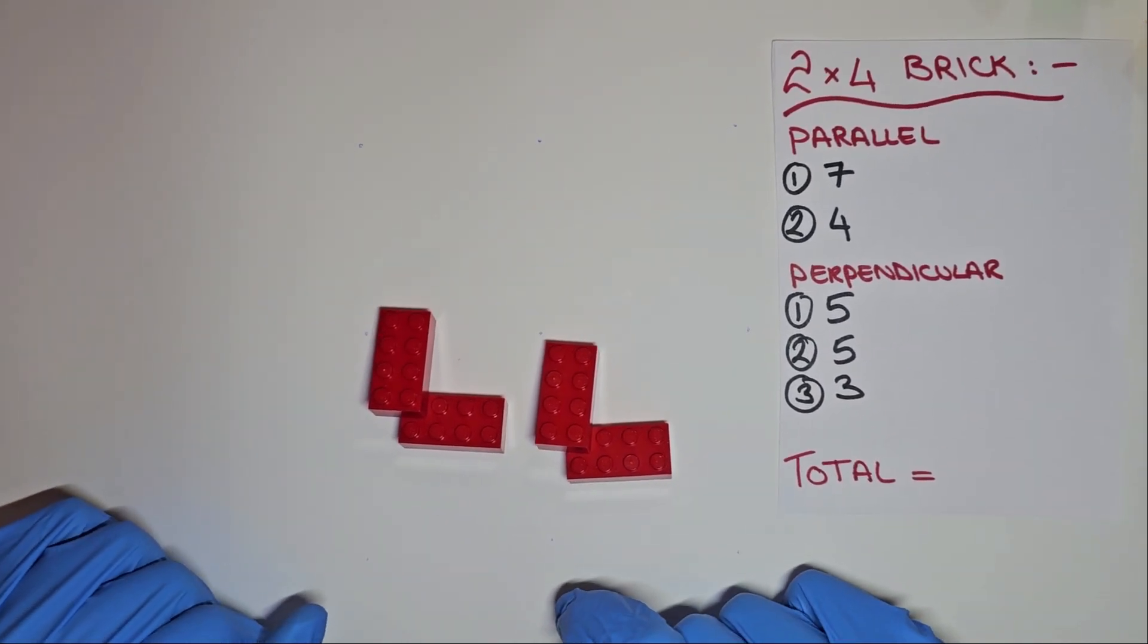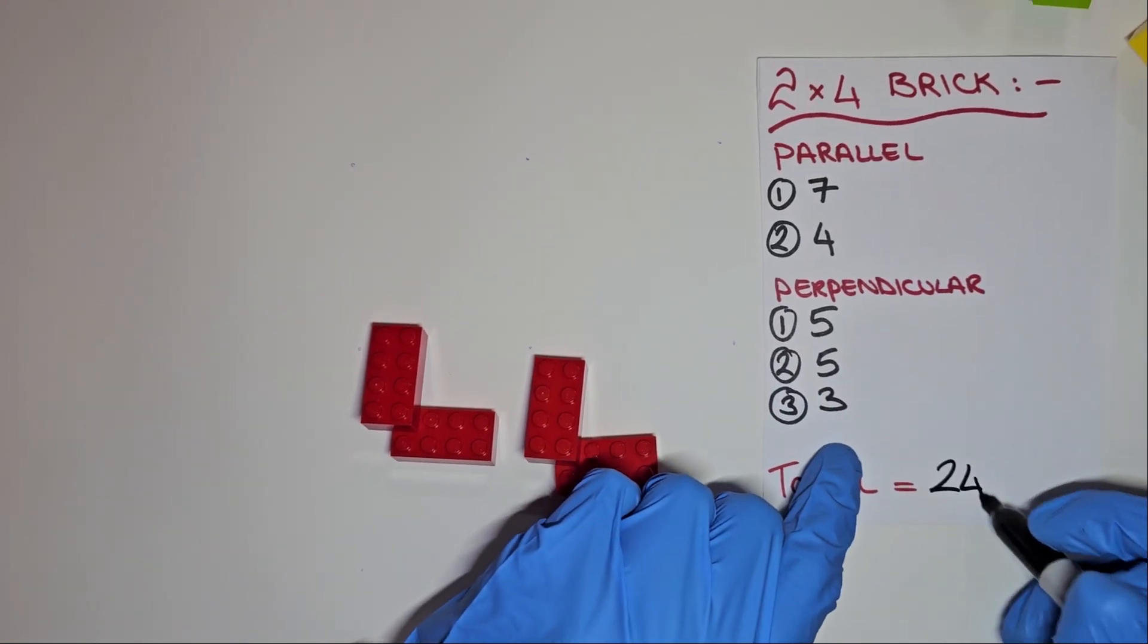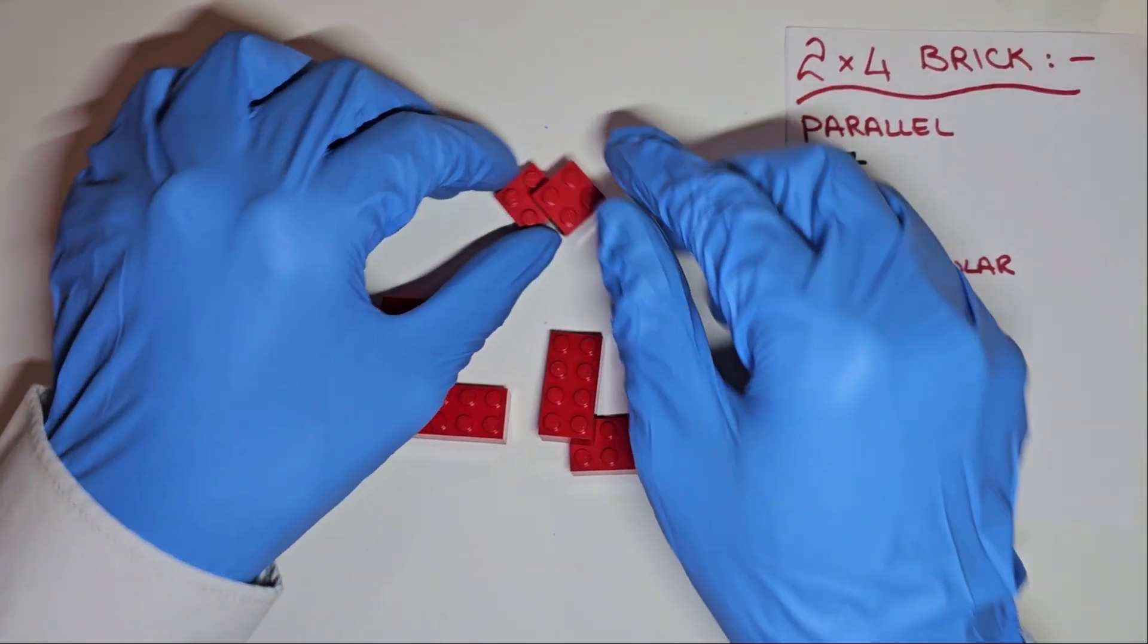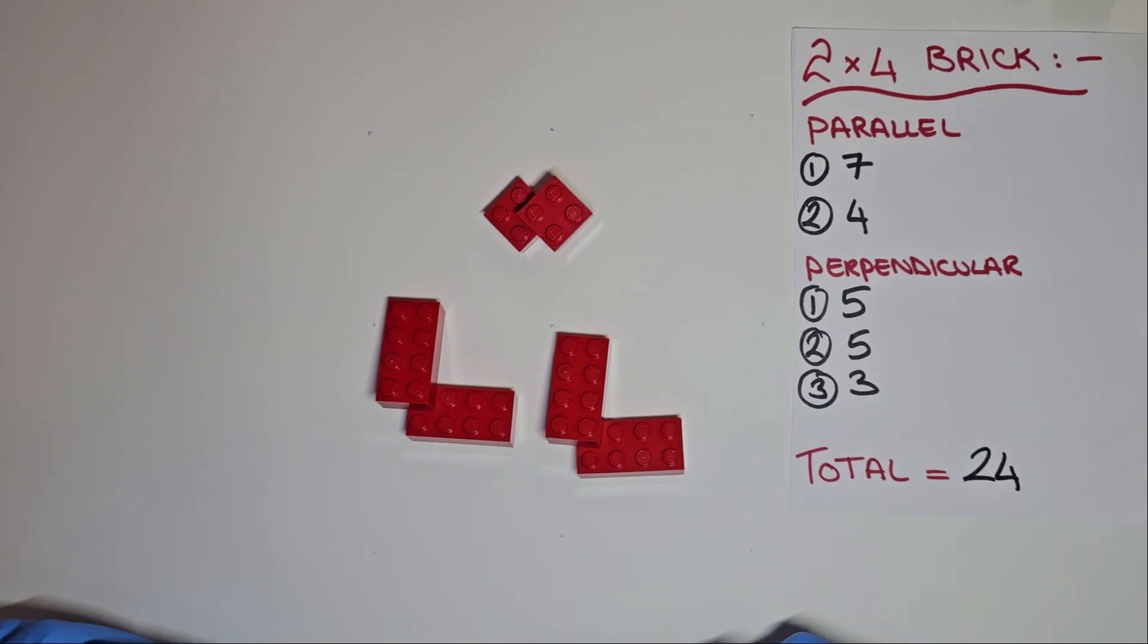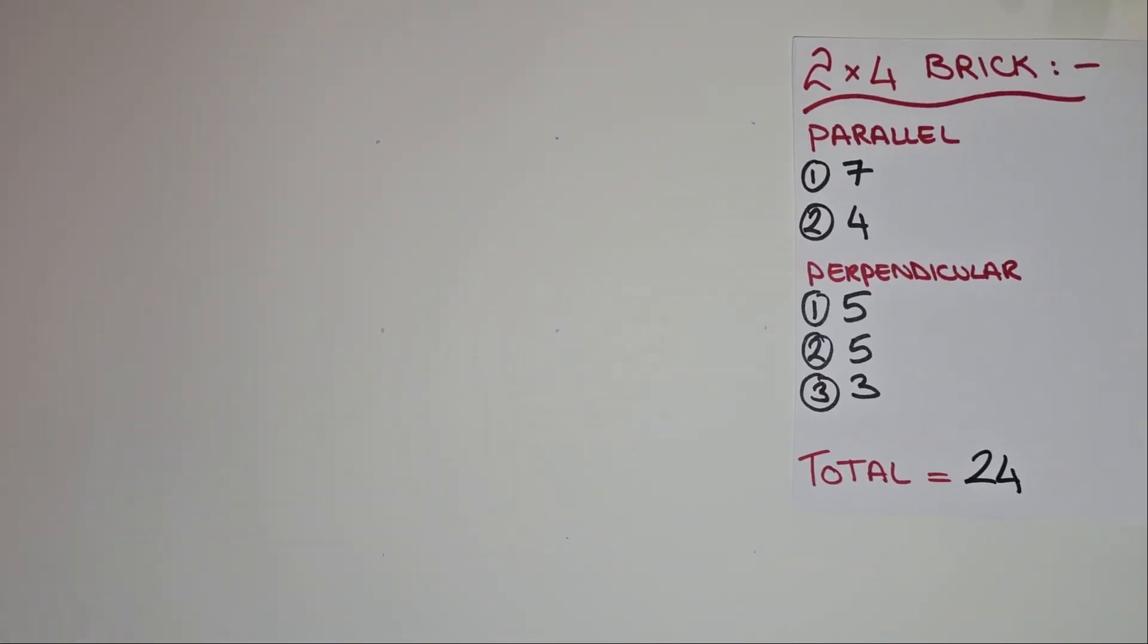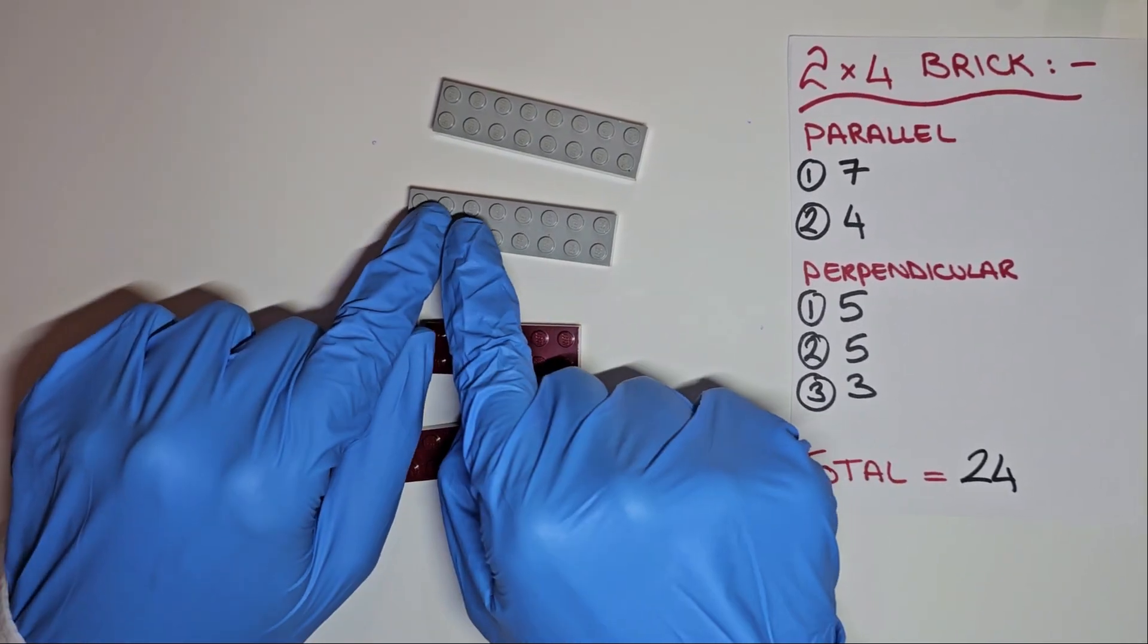Summing them up, we have 24 combinations in total. 24 is surprising, considering that with 2x2 bricks, we only have 3. This begs the question, for our larger bricks with 2xm number of studs, is there a general pattern? And if so, what's the formula linking m, the length of a brick, to the number of combinations?